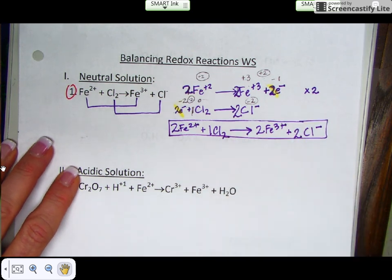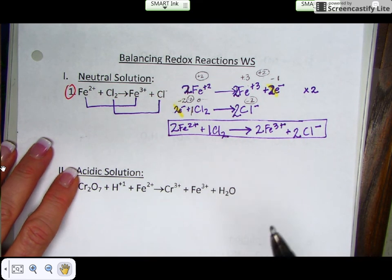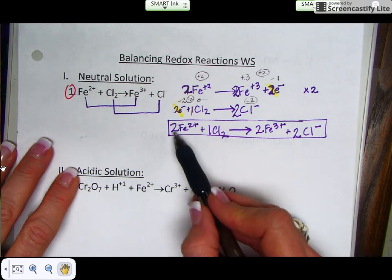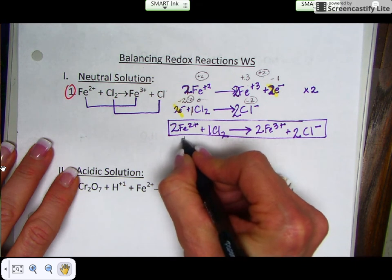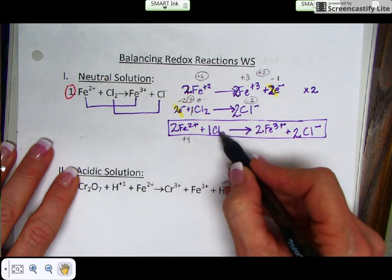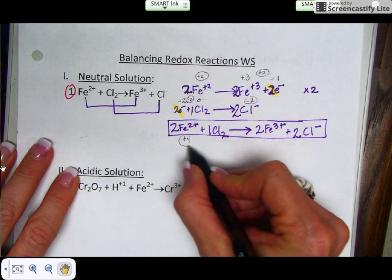Now if you go back and double check, everything should be balanced. First, charge and number of atoms. Notice my charge. 2 times a +2 gives me a +4, and chlorine is neutral, so 0. So this whole side here is a +4.